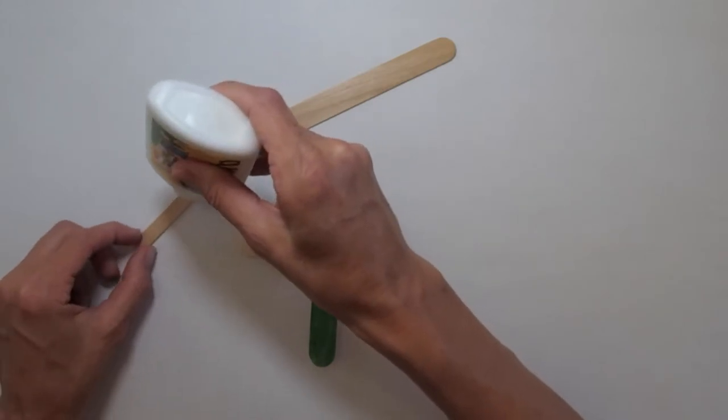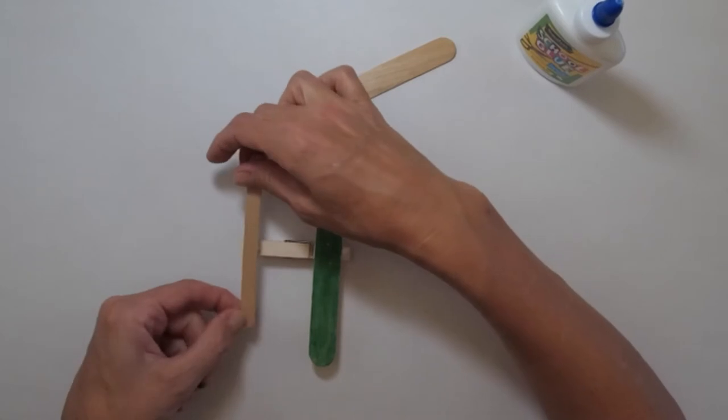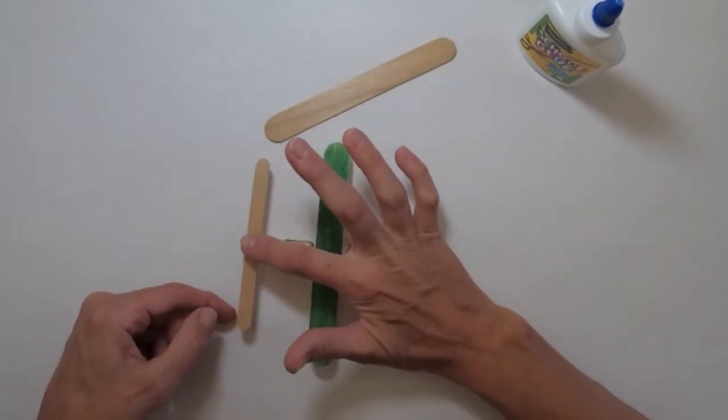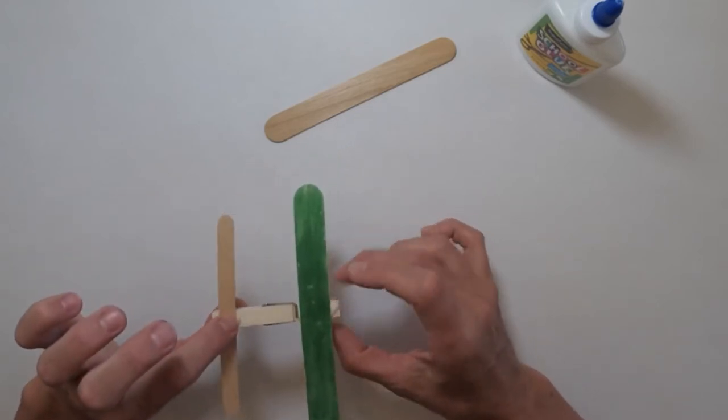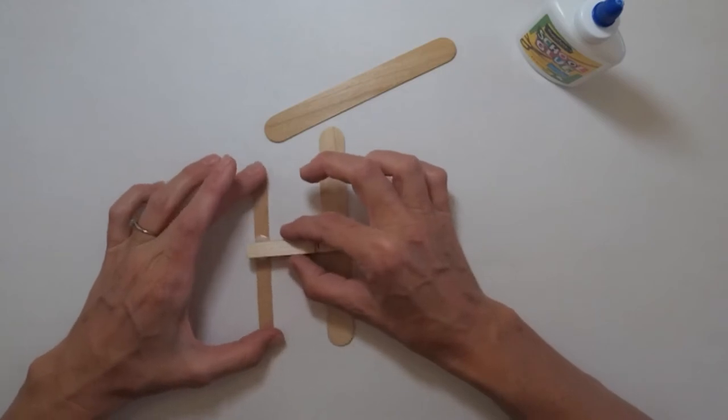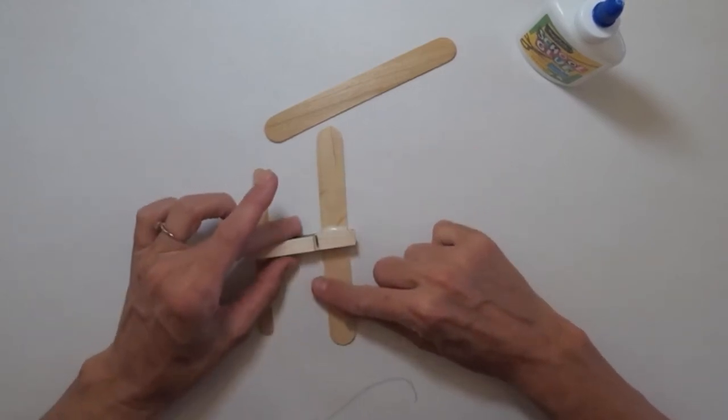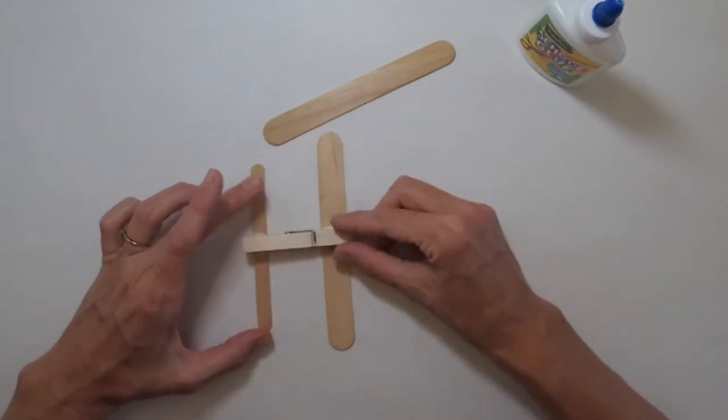So I'm just going to go ahead and put a little bit of glue in the middle. You can put it directly on the clothespin. And if you don't want to wait like me, you can just carefully flip this over. Make sure they're still centered. Pretty good, pretty good.